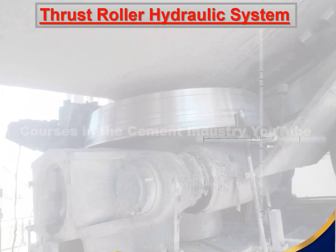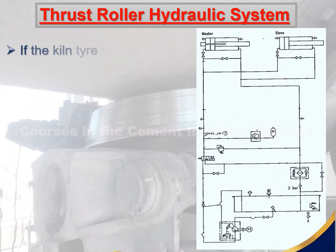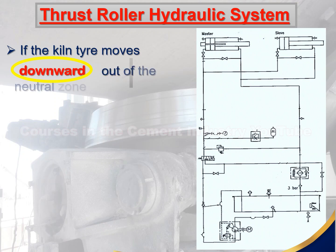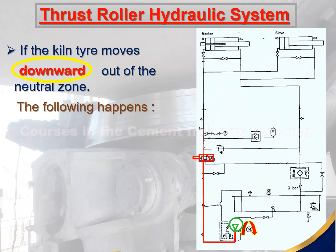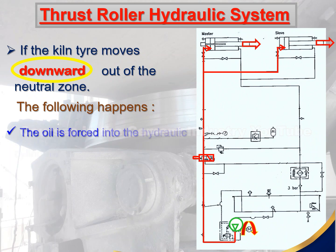Thrust roller hydraulic system: if the kiln tire moves downward out of the neutral zone, the following happens — oil is forced to the hydraulic cylinders, which forces the rotary kiln tire back into position.